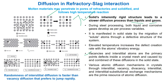Various atomic diffusion mechanisms in crystals — through interstitial, vacancy, divacancy, interstitial, and interstitial-substitutional exchange mechanisms — are the prime sources of atomic diffusion, represented by a schematic. The randomness of interstitial diffusion is faster than vacancy diffusion. Diffusion is predominant when molten material penetrates the refractory at high temperature, causing interaction that alters the microstructure and leads to corrosion.